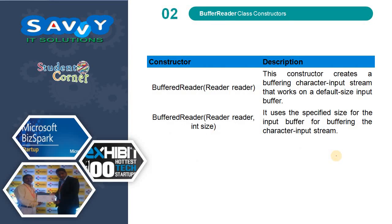Now, the constructors. The first constructor is BufferedReader(Reader inputStream), and the second is BufferedReader(Reader reader, int size). The first constructor creates a buffering character input stream that works on a default size input buffer. The second constructor uses the specified size for the input buffer for buffering the character input stream.